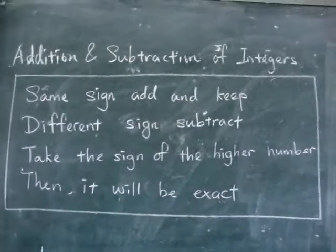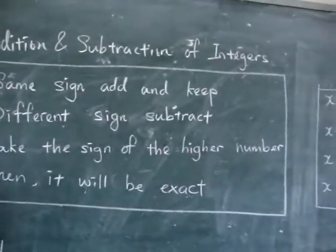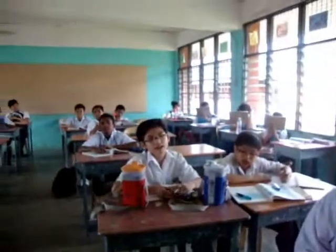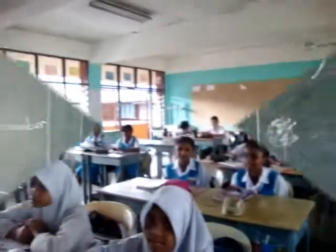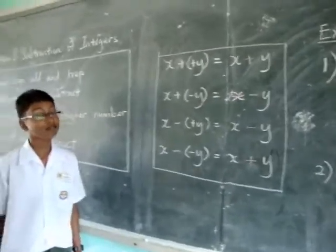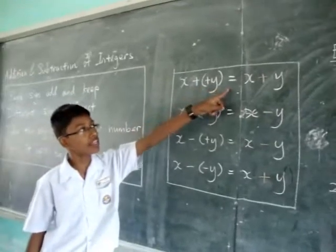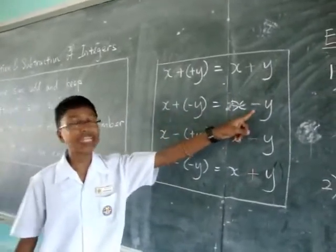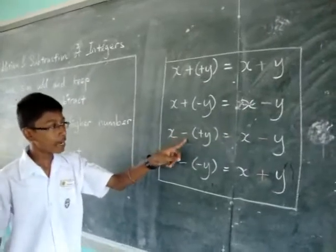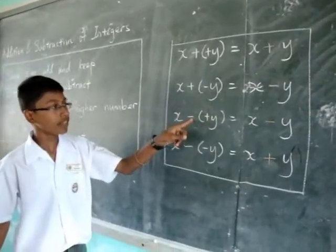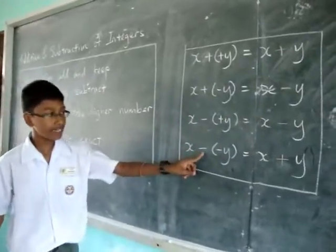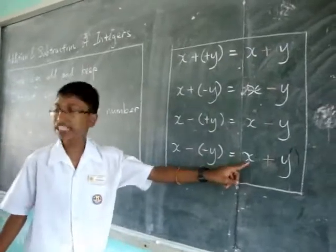Addition and subtraction of integers. The rules are: x plus positive y equals x plus y. x plus negative y equals x minus y. x minus positive y equals x minus y. x minus negative y equals x plus y.